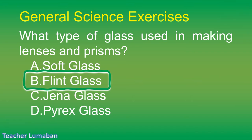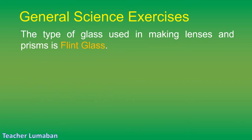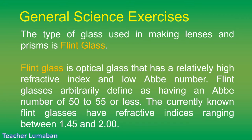The correct answer is Letter B: flint glass. The type of glass used in making lenses and prisms is flint glass. Flint glass is optical glass that has a relatively high refractive index and low Abbe number. Flint glasses are arbitrarily defined as having an Abbe number of 50 to 55 or less. The currently known flint glasses have refractive indices ranging between 1.45 and 2.00.